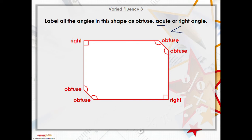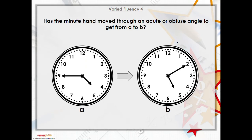Okay, the next question says has the minute hand moved through an acute or obtuse angle to get from time a to b? Now remember, clocks move in a clockwise direction which we looked at on Monday.